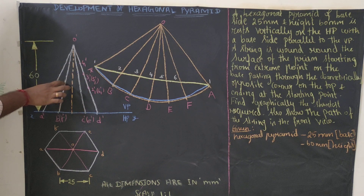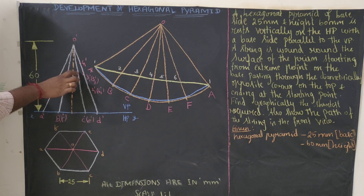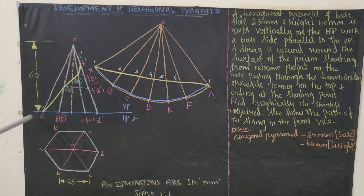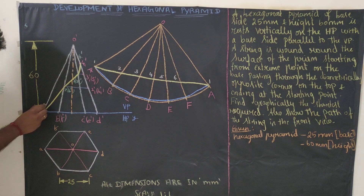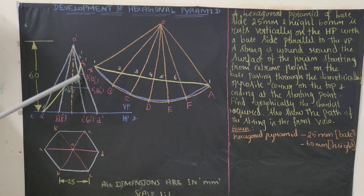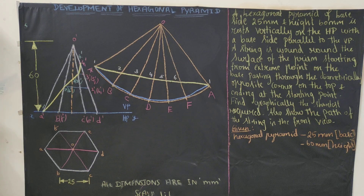Point 2 is between O and B - extend this point vertically to get 2 dash. Point 6 dash is between O dash and F dash. Point 3 dash is between O and C - extend it vertically to get the third point. Point 5 dash is between O dash and E dash - extend it vertically. Point 4 dash is between O dash and D dash - extend it vertically. Mark all six points: 1 dash, 2 dash, 3 dash, 4 dash, 5 dash, 6 dash.